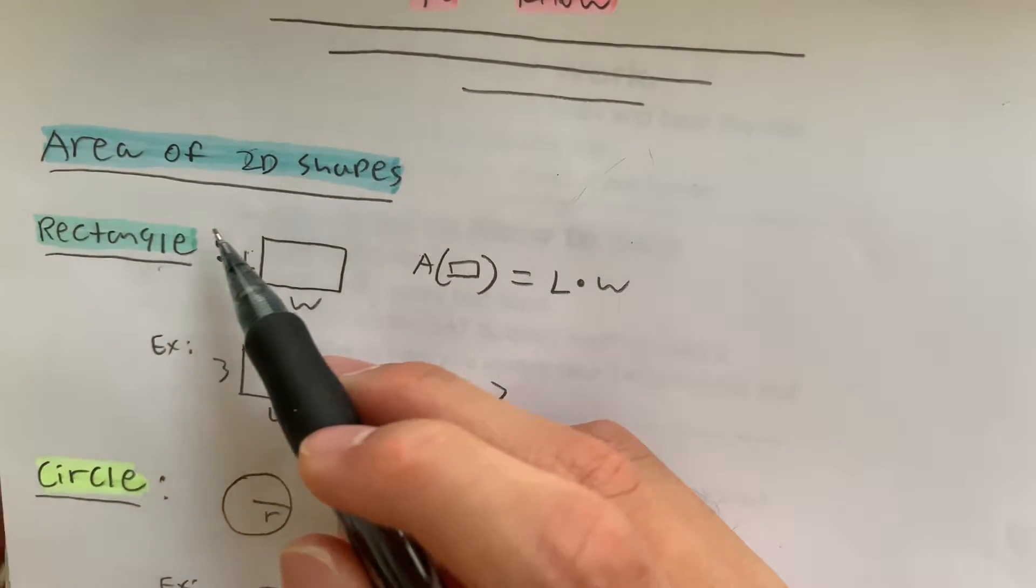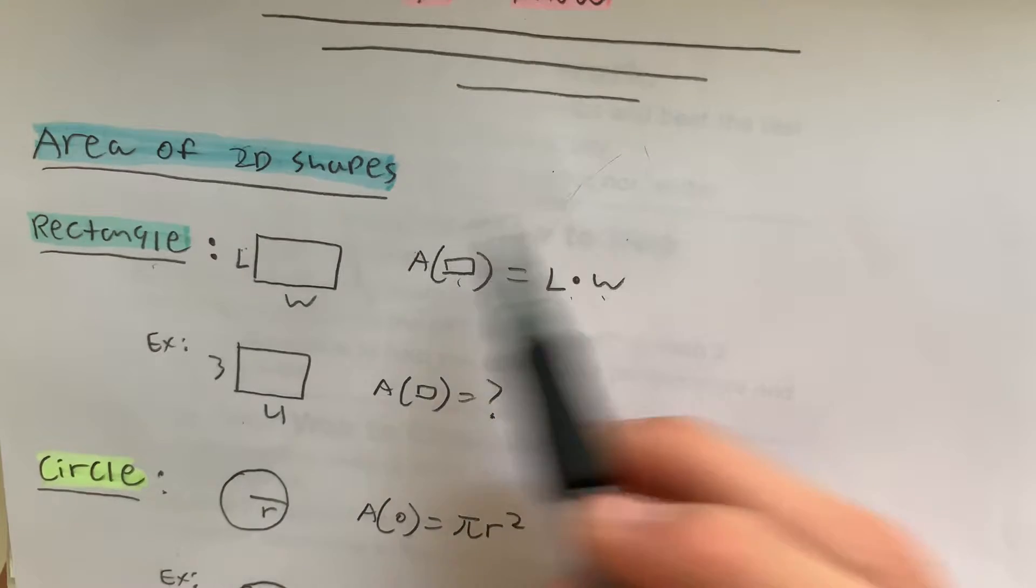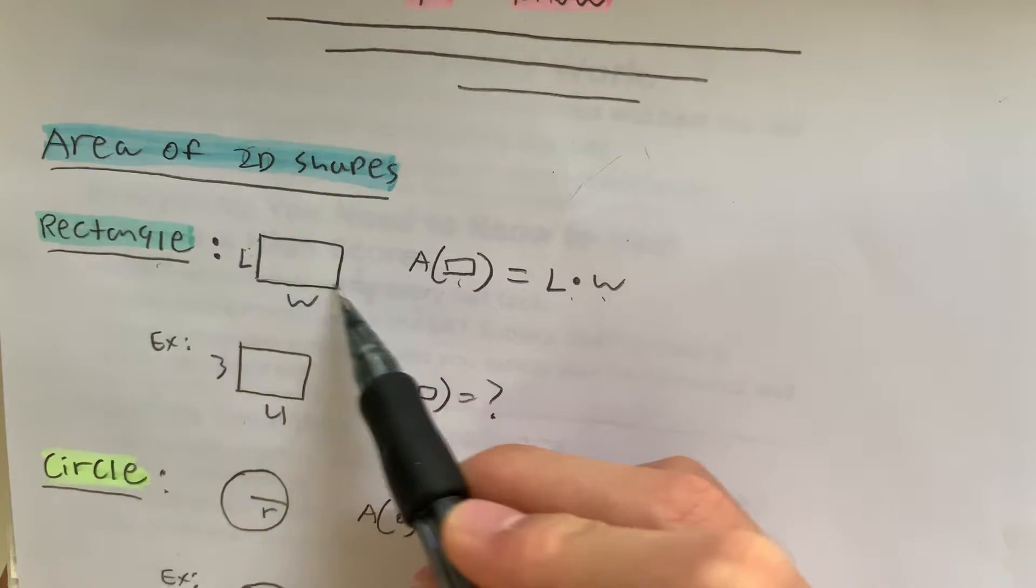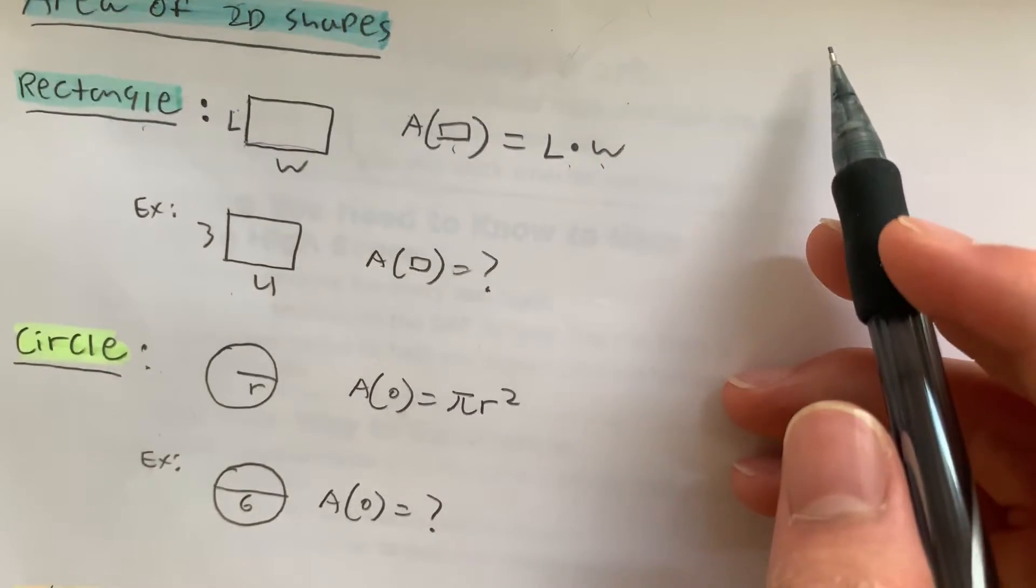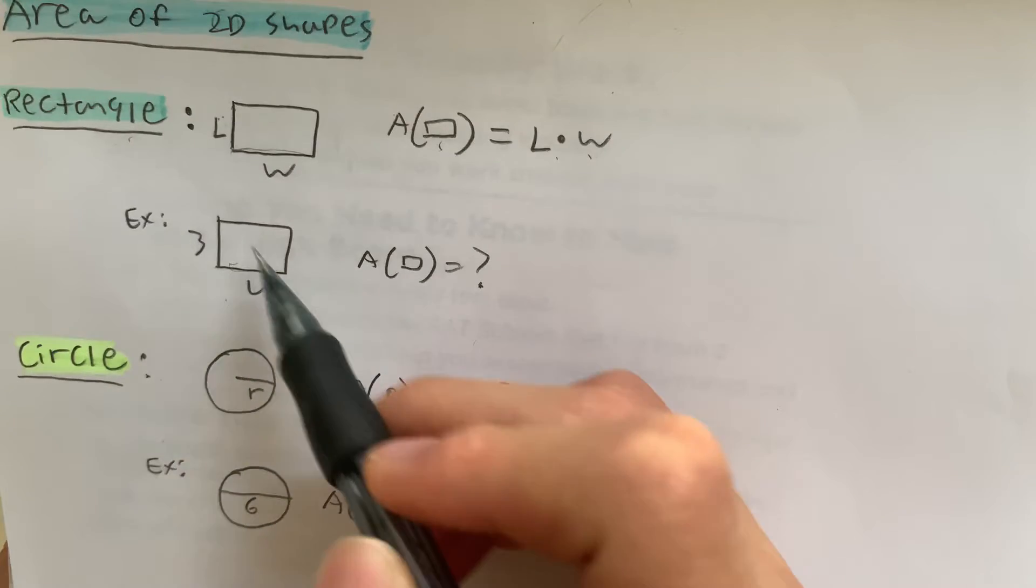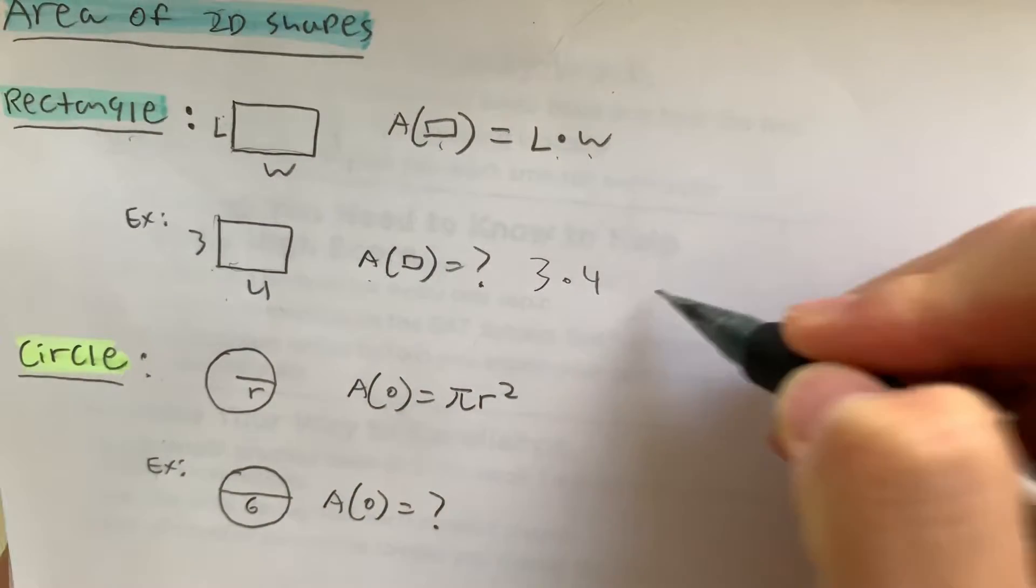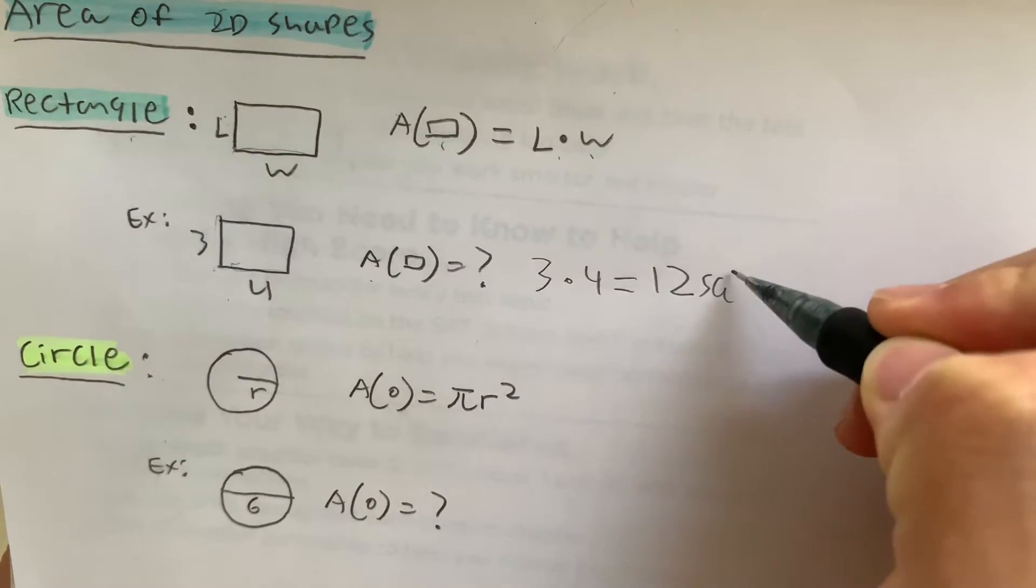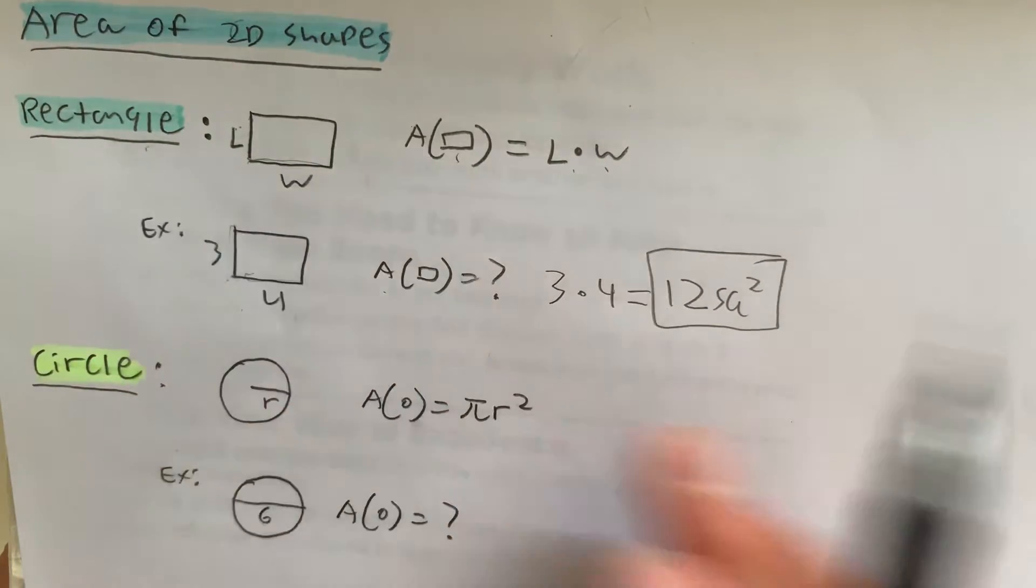The simplest of them all are 2D shapes, the area of 2D shapes that you normally see. The first one is a rectangle. The area of a rectangle is pretty simple - it's just length times width, where length and width are the side lengths of the rectangle. So let's look at this really easy example. If the length is 4 and the width is 3, what is the area? It's just 3 times 4, which equals 12 square units. That's the area of a rectangle.